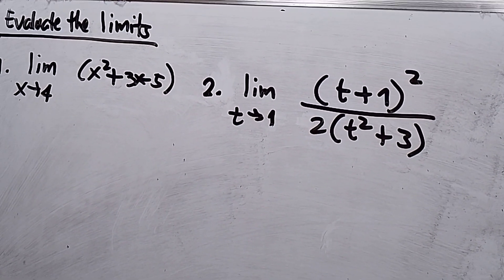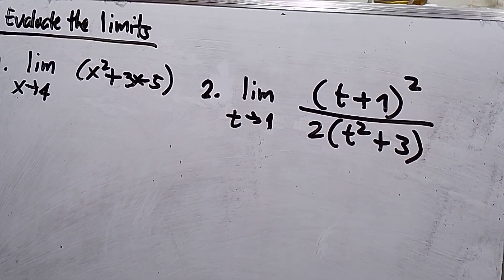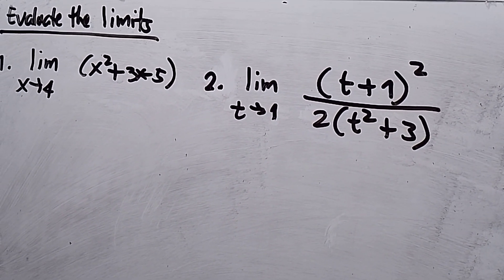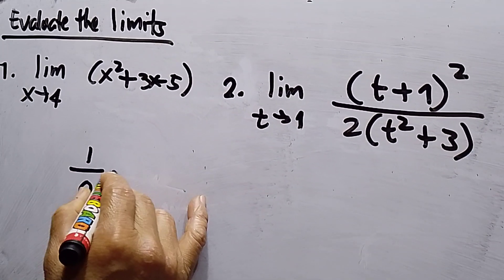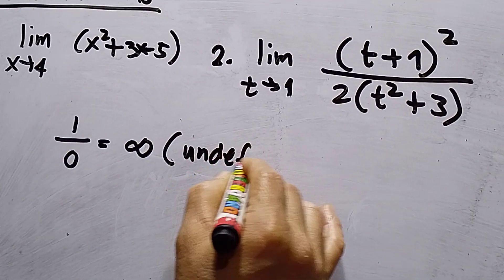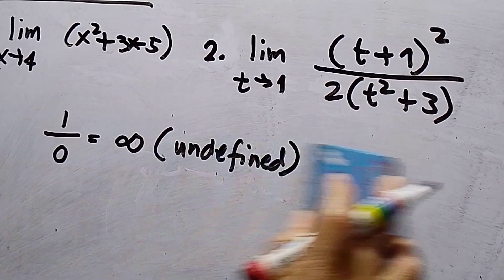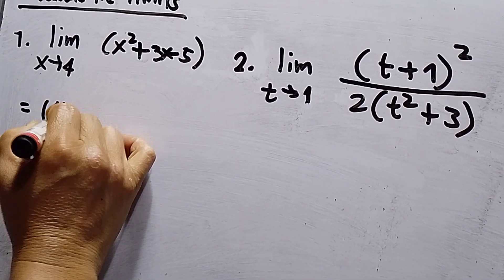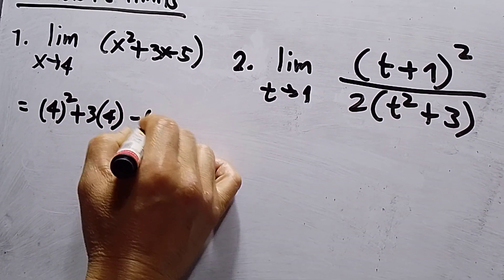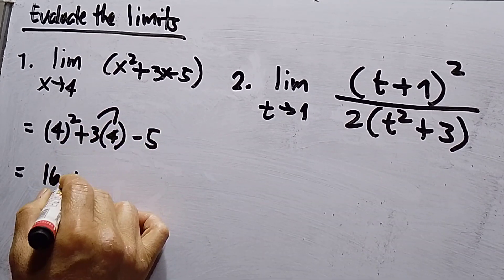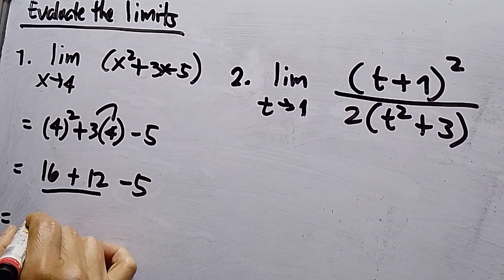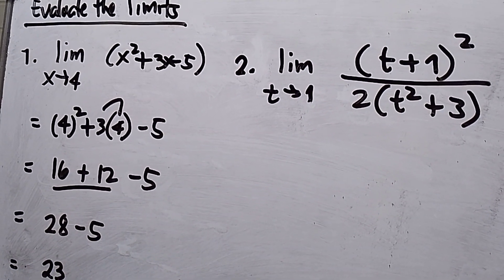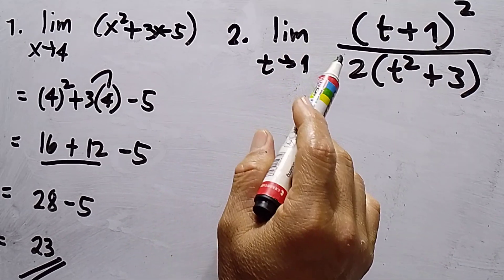This is Part 2 in derivatives — evaluate the limits. Number one: limit x approaches 4, function is x squared plus 3x minus 5. Note that 1 over 0 is undefined. We can substitute straight away since this is not undefined: 4 squared plus 3 times 4 minus 5 equals 16 plus 12 minus 5, which is 28 minus 5. The answer for number one is 23.